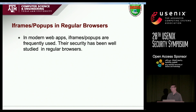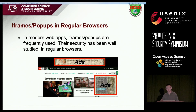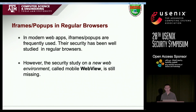In modern web applications, iFrame pop-ups are frequently used. Here is a snapshot of CNN. iFrames are used to load untrusted content or attachments. In the past years, there are a lot of security issues found in iFrame pop-ups, and the security of these behaviors has been well studied. But existing work mainly focuses on regular browsers, and the security research on a new web environment called Android WebView is still missing.